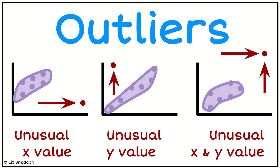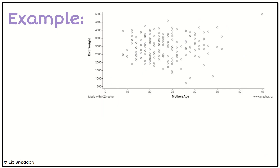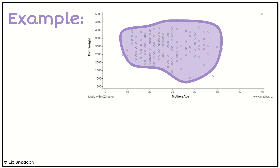Those are our three types to keep an eye out for. The key is to think about what the pattern is. Here's an example — I've drawn a blob around most of the data, and what I want us to notice is there's a point right up in the top right-hand corner which is quite a way away from the rest of the pattern.